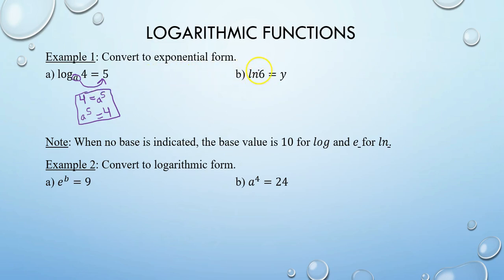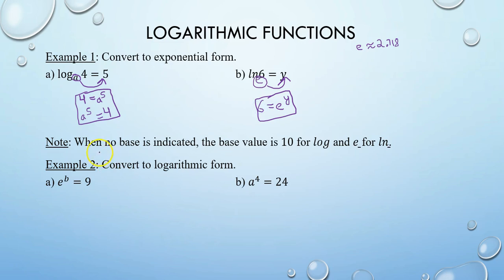Next, natural log of 6 equals y. Instead of the regular log, this is the natural log. What's special about the natural log is that it always has a base of e, which is Euler's constant — e is approximately 2.718. Circle your base e. e is hanging with 6 in log form, so e hangs out with y in exponential form, giving you 6 equals e to the y. When there is no base indicated, the base of the log function is always 10. And it will always be e for the natural log function, ln.